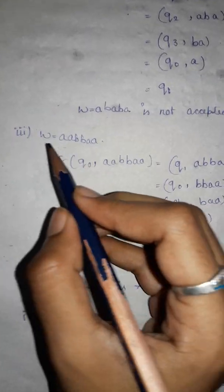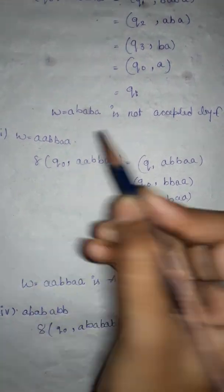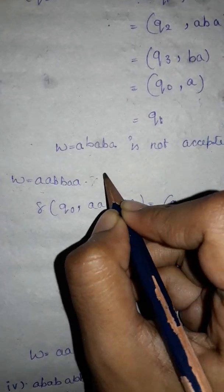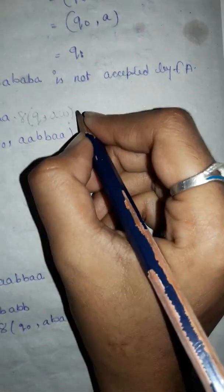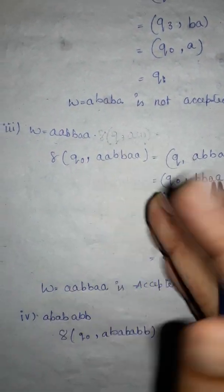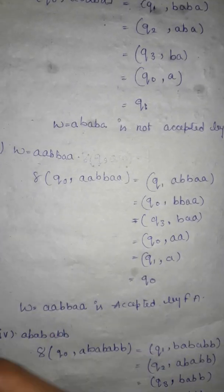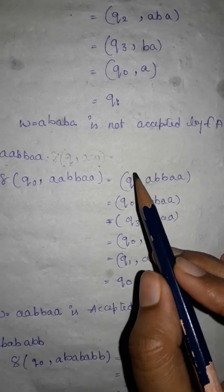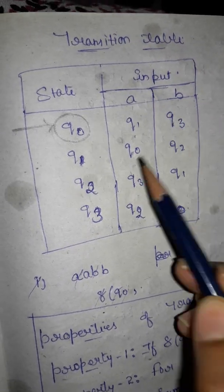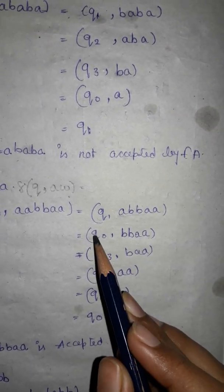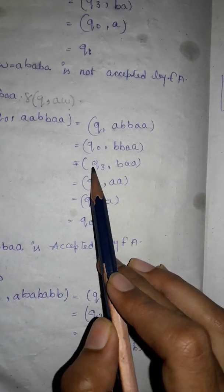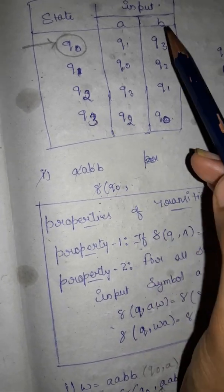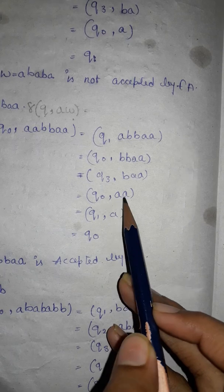Now let's discuss another example: w = aabbaa. Transition of q0 comma aabbaa: q0 on a goes to q1, remaining string abbaa. q1 on a goes to q0, remaining string bbaa. q0 on b goes to q3, remaining string baa. q3 on b goes to q0, remaining string aa.